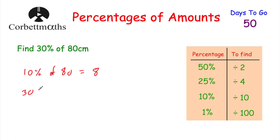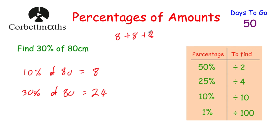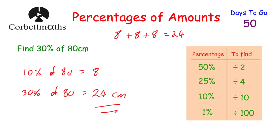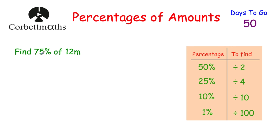Now we want to find 30% of 80. We could just multiply our 10% result by 3, because that's three lots of 10%, and 3 times 8 is 24. Or, knowing that 10% equals 8, we could do 8 plus 8 plus 8, which also equals 24. So the answer is 24 centimetres.